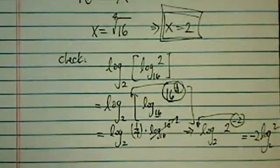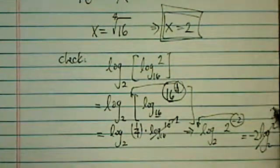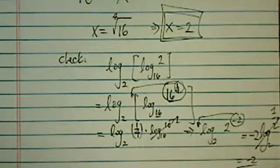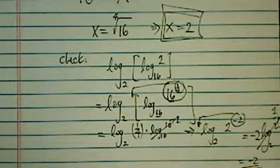Running out of room here. Log base 2 of 2 becomes 1. Then the final answer is minus 2, so it checks out.